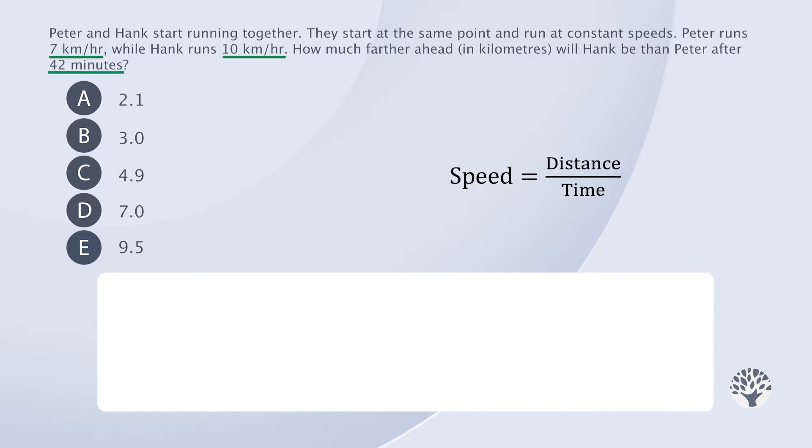So we need to calculate how far each of them gets in 42 minutes and simply subtract one value from the other. Of course, the formula we need is distance equals speed multiplied by time. However, one small challenge here is that the time is provided in minutes and speed in kilometers per hour.